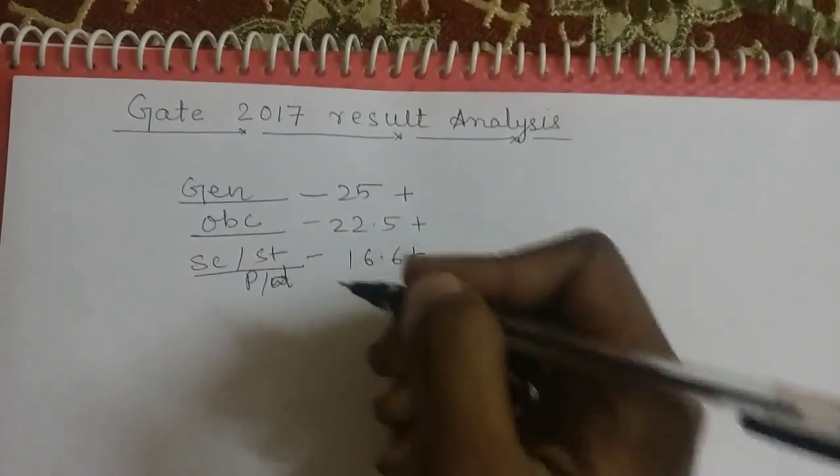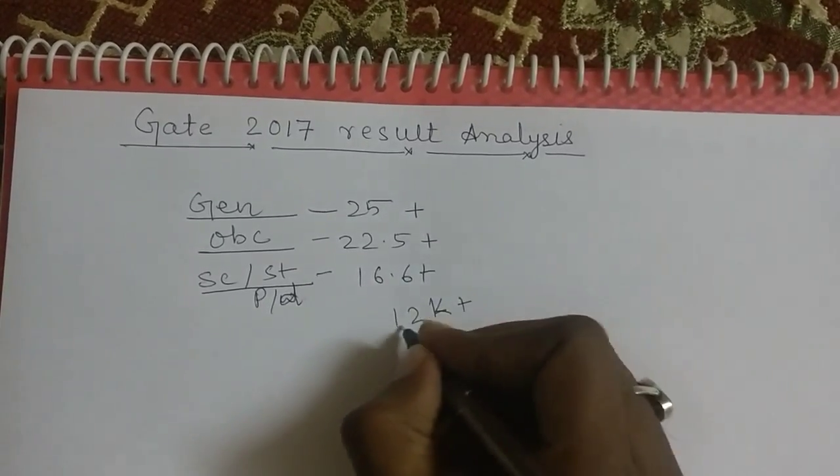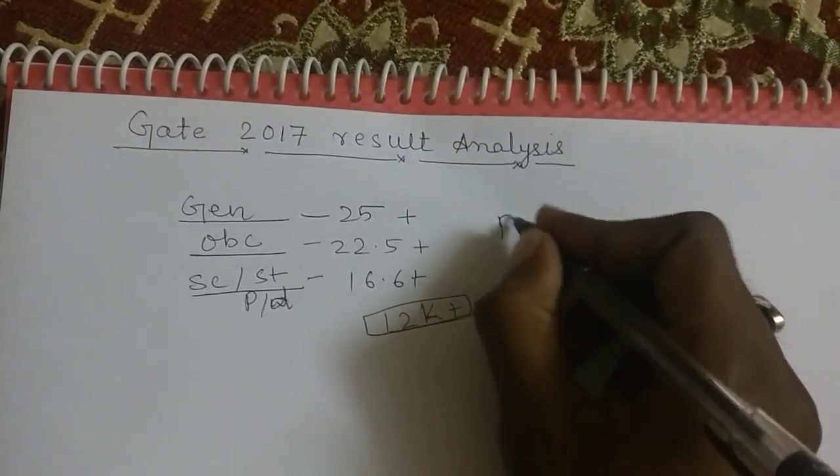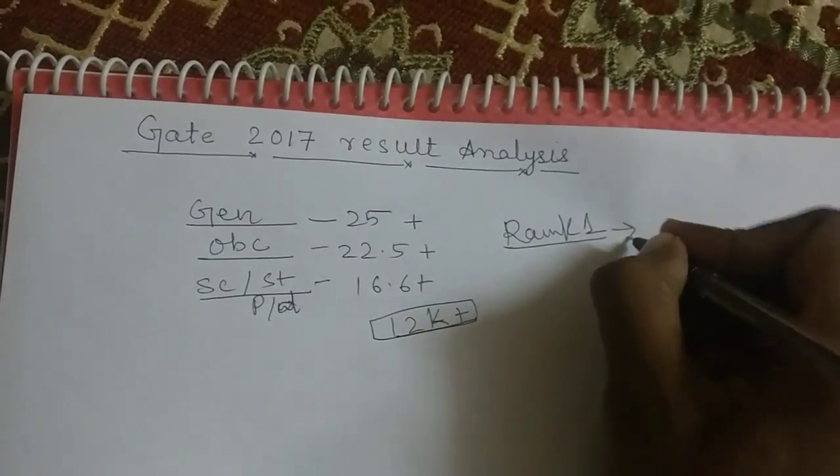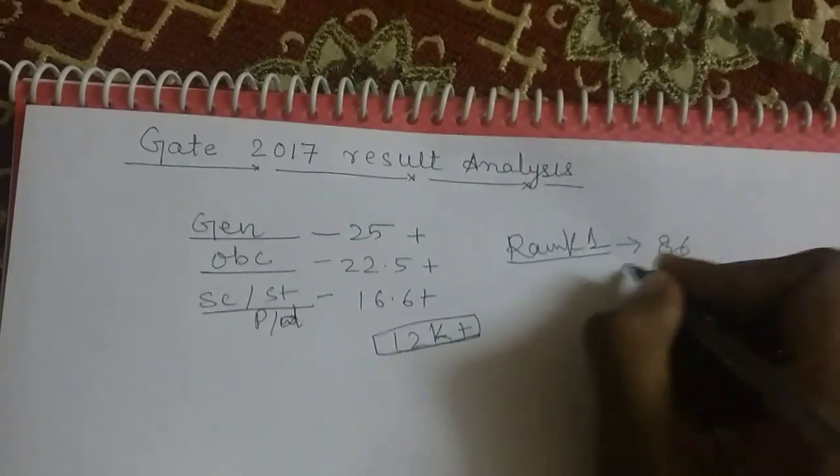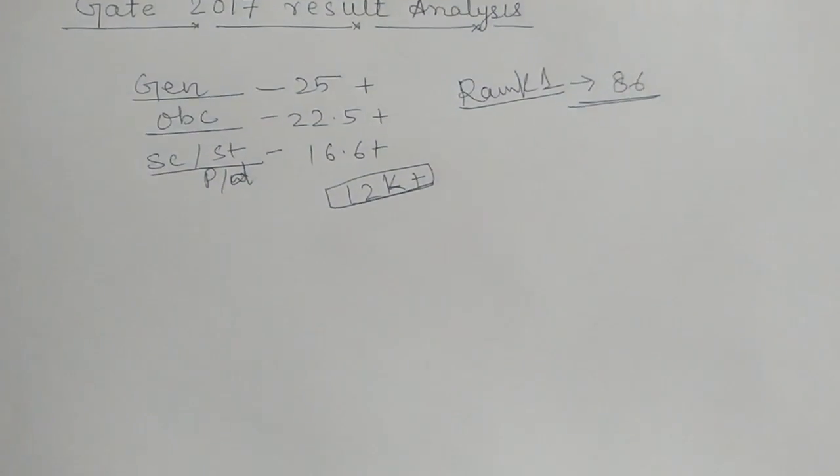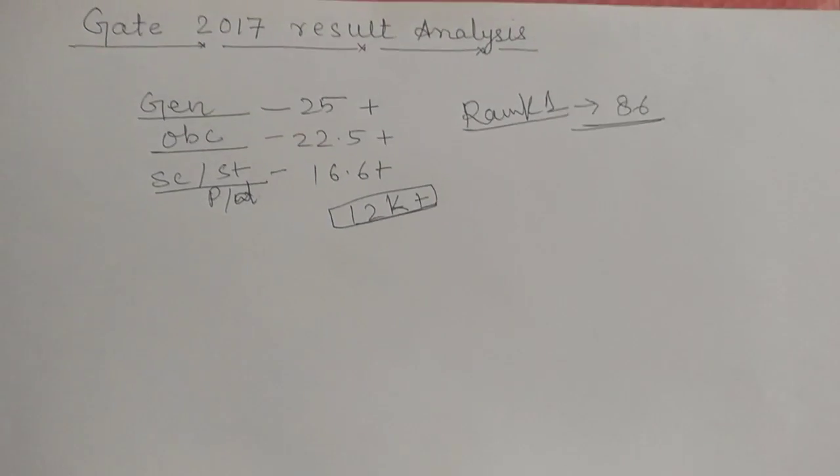So, around 12,000 candidates qualified GATE this time, of which this year rank 1 student, the student who got rank 1, he got 86 marks. That trend is like previous year only, every year a topper gets 85 or 86, basically in computer science GATE exam.